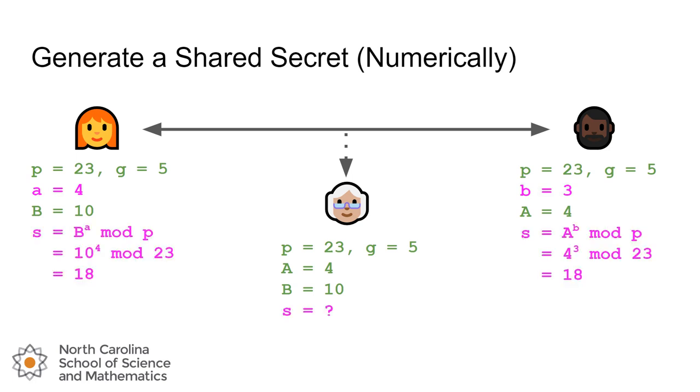What Bob can now do is create a shared secret. We're going to take capital B to the a—so Alice is going to do 10 to the fourth mod that by 23. Bob's going to do the same thing. He's going to take Alice's value of four, cube it, and then mod by 23. They both get 18. What's hard for Eve to do here is that because she doesn't have access to lowercase a or lowercase b, only capital A and capital B, it's going to be really hard for her to figure out what that shared secret of 18 is.